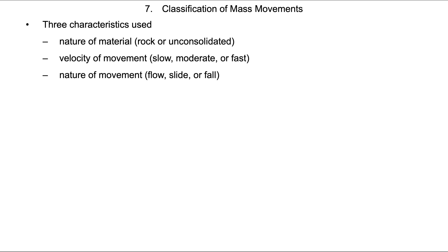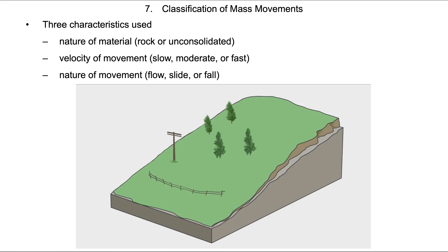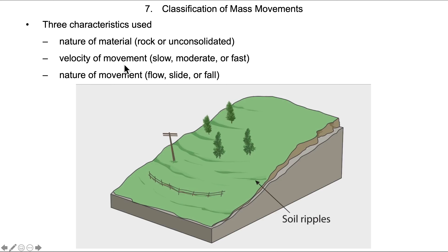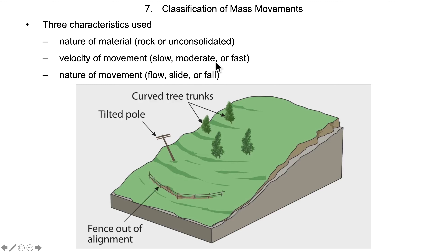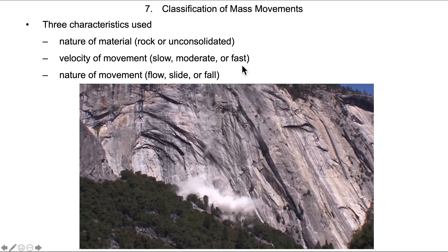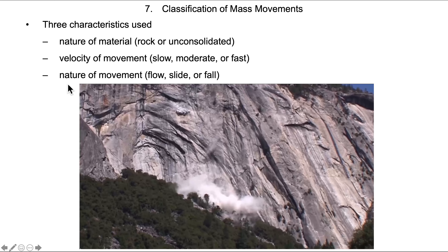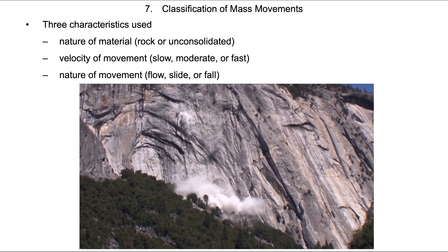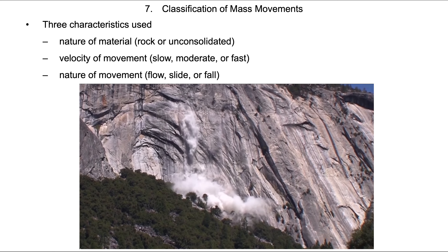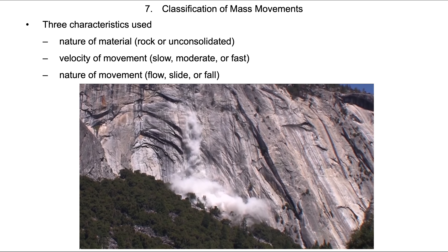The characteristics used to classify mass movements include the nature of the rock — whether it's consolidated (still rock) or unconsolidated (broken up). The velocity of movement can be slow and almost imperceptible (called creep), moderate (slumping), or fast — potentially hundreds of miles or kilometers per hour. And the nature of the movement — whether it's a flow, a slide, or a fall — is related to angles and gravity.